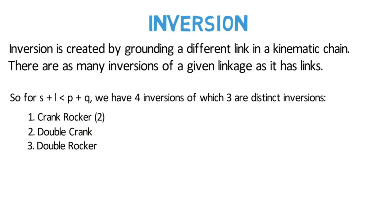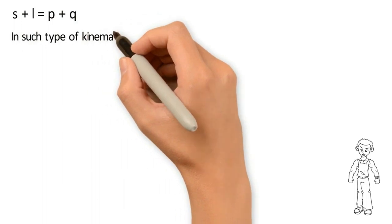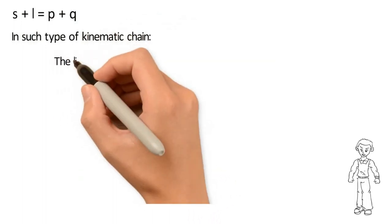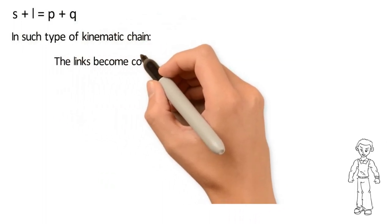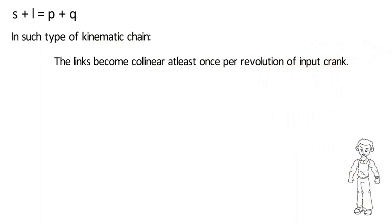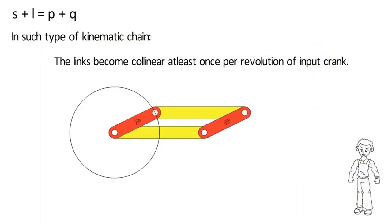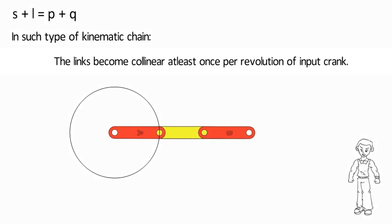Now we proceed to discuss the second part of the Grashof condition: S plus L equals P plus Q. In such a kinematic chain, the links become collinear at least once per revolution of the input crank. Collinear means all the links are along a straight line.